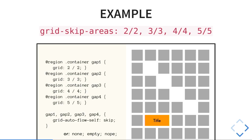Once this is implemented, for this example we could say grid-skip-areas: 2 / 2 — that's the second row, second column — and comma, 3 / 3, and all that.